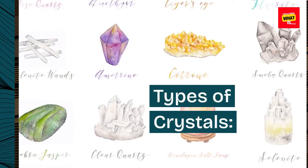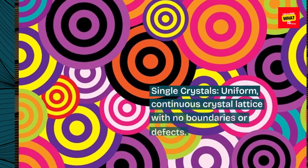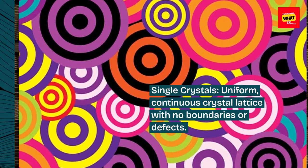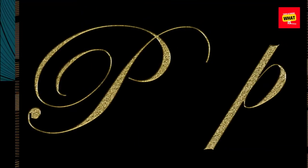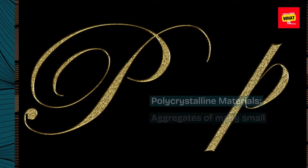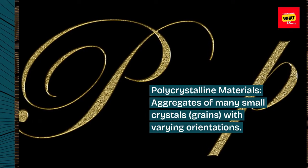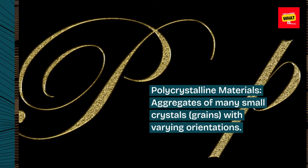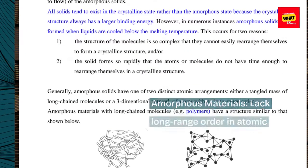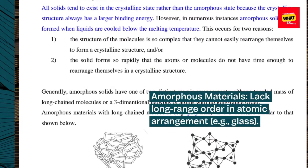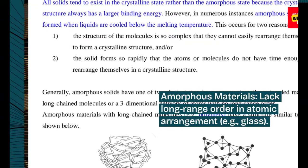Types of Crystals. Single Crystals: uniform, continuous crystal lattice with no boundaries or defects. Polycrystalline Materials: aggregates of many small crystals, or grains, with varying orientations. Amorphous Materials: lack long-range order in atomic arrangement, e.g., glass.